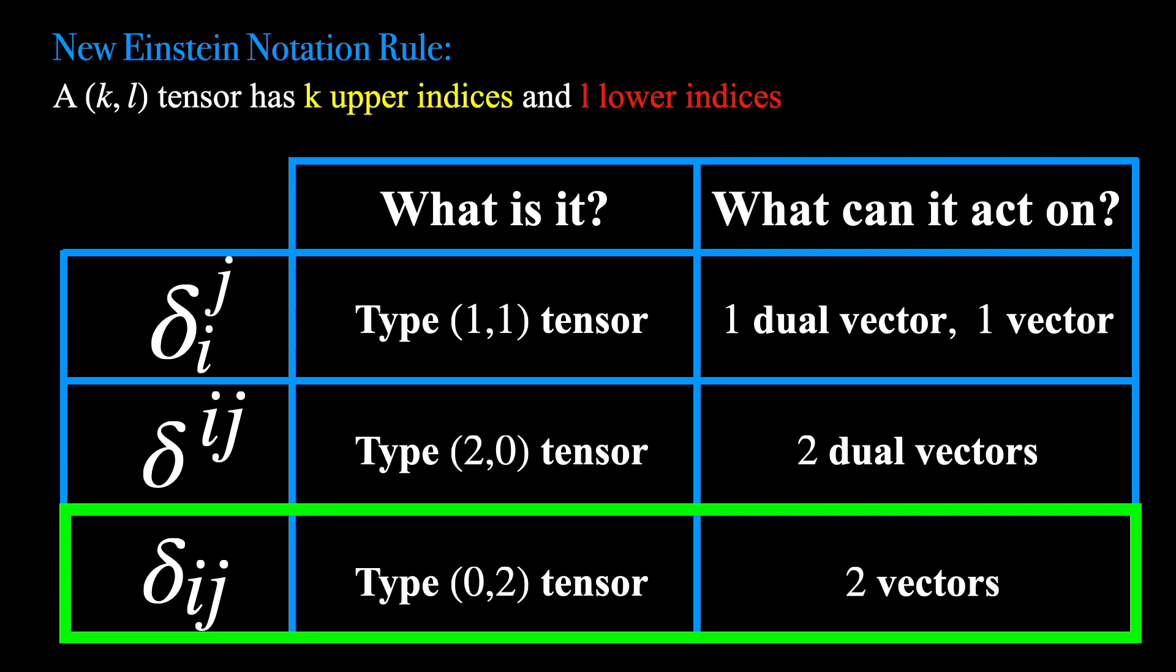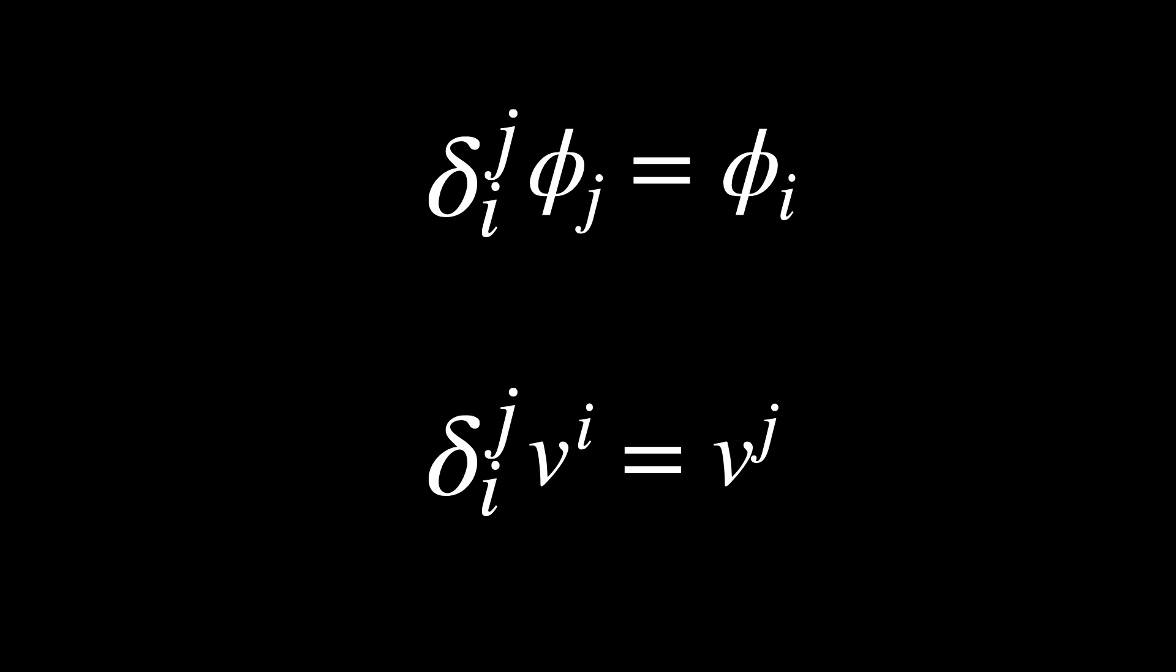Okay, so that seems clear enough, but you've likely also seen these tensors acting on only one object, either one vector or one dual vector. How is this consistent with what I've been saying?